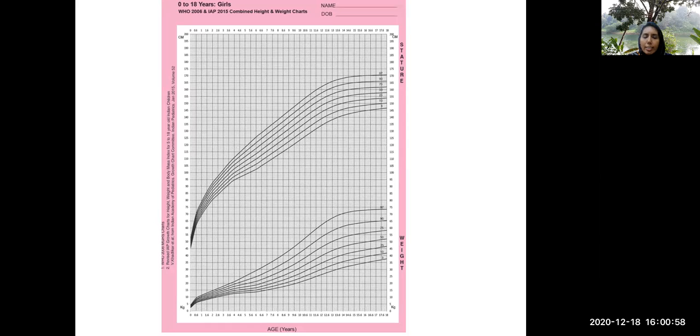So we need to have a chart where there is height plotted at 18 years. That is where the importance of combined WHO IAP charts come. Don't worry if you are not getting it. You just put it in Google - IAP WHO charts 0 to 18 years. There you will get this chart. Girls means pink charts and boys is blue charts.